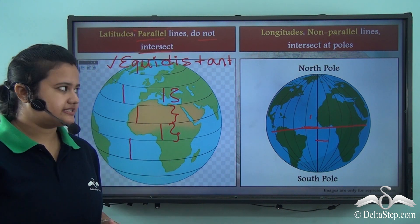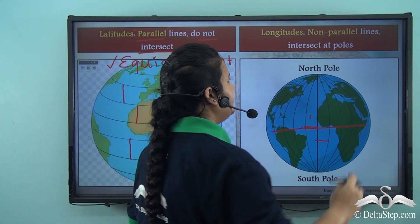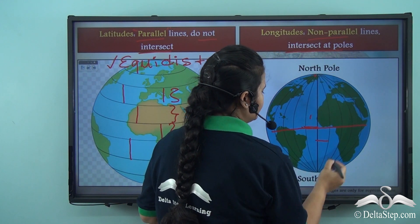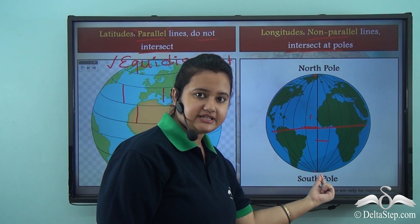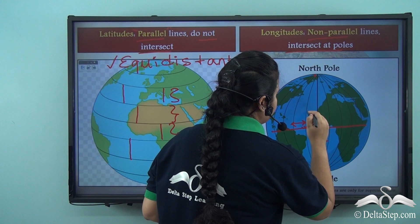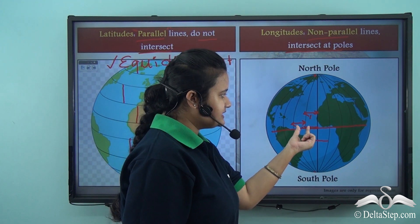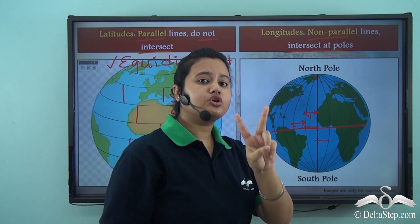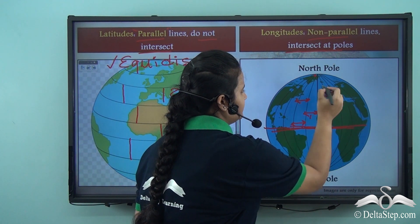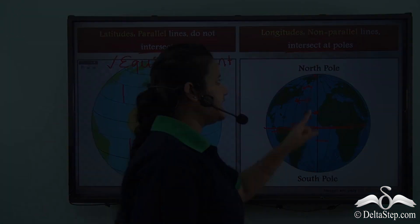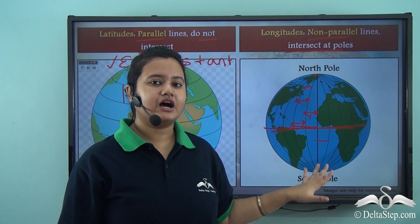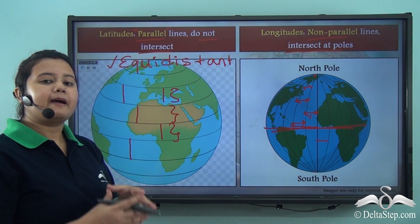Hence, latitudes are parallel lines — they never meet or intersect. Whereas longitudes are non-parallel lines and they intersect at the poles. At both poles, the longitudes are actually intersecting or touching each other. Also, the distance between two longitudes is never the same — the distance between two consecutive longitudes at the equator is the greatest, and as we move towards the poles the distance gradually decreases until the lines of longitudes meet at the poles.